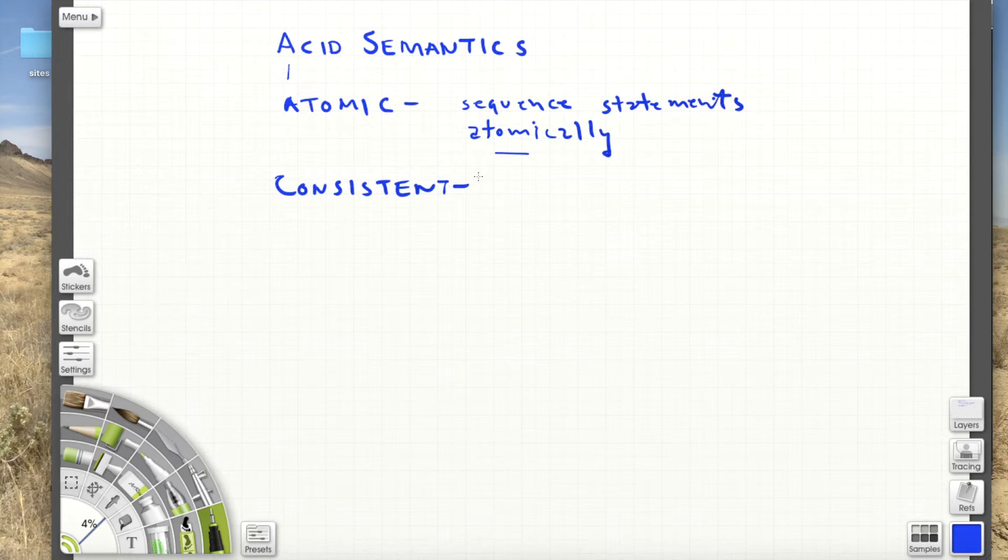Consistent means that one transaction will move the database from one valid state to another valid state. So if we started the day with having a thousand dollars in our accounts, 500 in Ann's account, 500 in Clara's account, and then we moved money from Ann to Clara's account, at the end of the day we still have a thousand bucks. We have this validity that states are valid. We just don't arbitrarily lose money at the end of the day. Also, consistency means that we can have constraints, foreign key constraints, or various other constraints. So that's consistency.